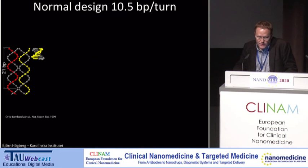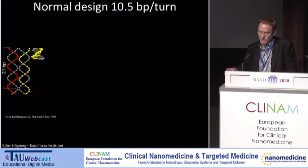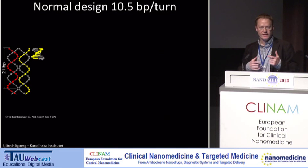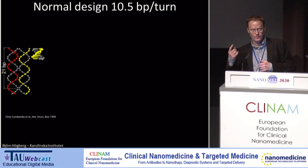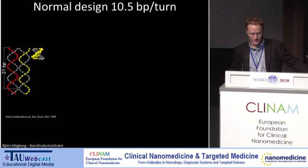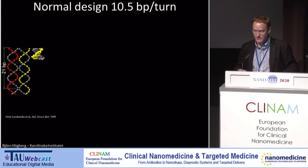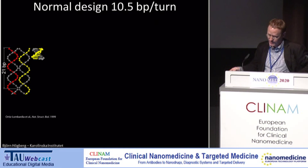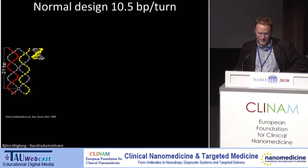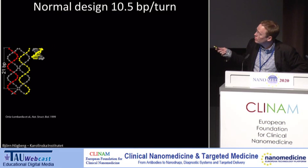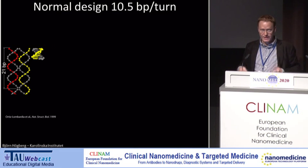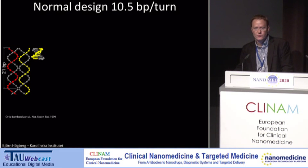Normally, when we design DNA origami objects, we use the fact that strands in double-stranded B-form DNA take almost exactly 10.5 bases to wind one complete turn around their complement. This is shown in crystallography data of six base pairs of normal double-stranded DNA. Because the DNA takes 10.5 bases to make a turn, if we go 21 bases, the DNA will have taken exactly two turns.